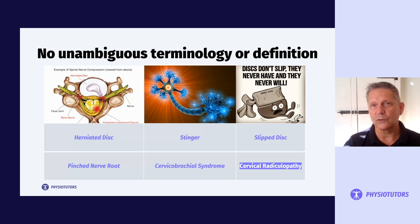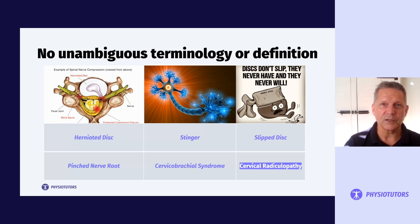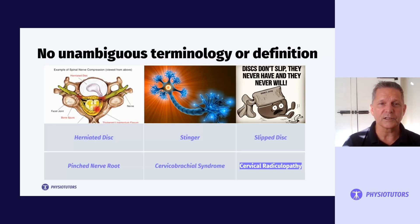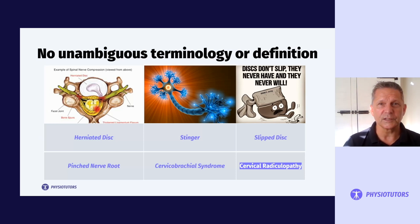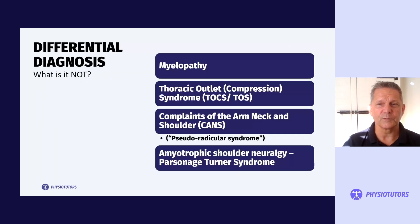There is no unambiguous terminology or definition for cervical radiculopathy. If you look at the research, especially over the past four to five decades, you'll find a number of terms probably referring to the same condition — things like a herniated disc, a pinched nerve root, in American sports medicine a stinger, cervical brachial syndrome, slipped disc, and other items — all probably referring to cervical radiculopathy.